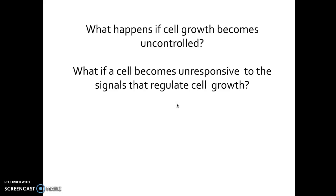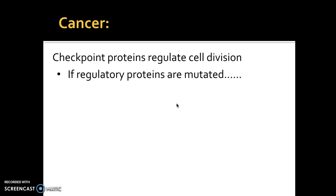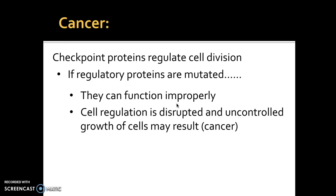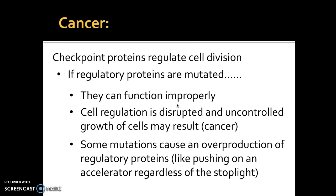What happens if a cell's growth becomes uncontrolled — if it just starts dividing way too quickly, or if cells become unresponsive to the signals that regulate cell growth? The answer is cancer. We have checkpoint proteins that regulate cellular division, but these proteins can have mutations just like anything else in our body. If those proteins become mutated, they may function improperly or not at all, making the cell regulation process disruptive. Uncontrolled growth of cells may result, which is what we call cancer. Anytime cells grow out of control, they form a clump called a tumor.